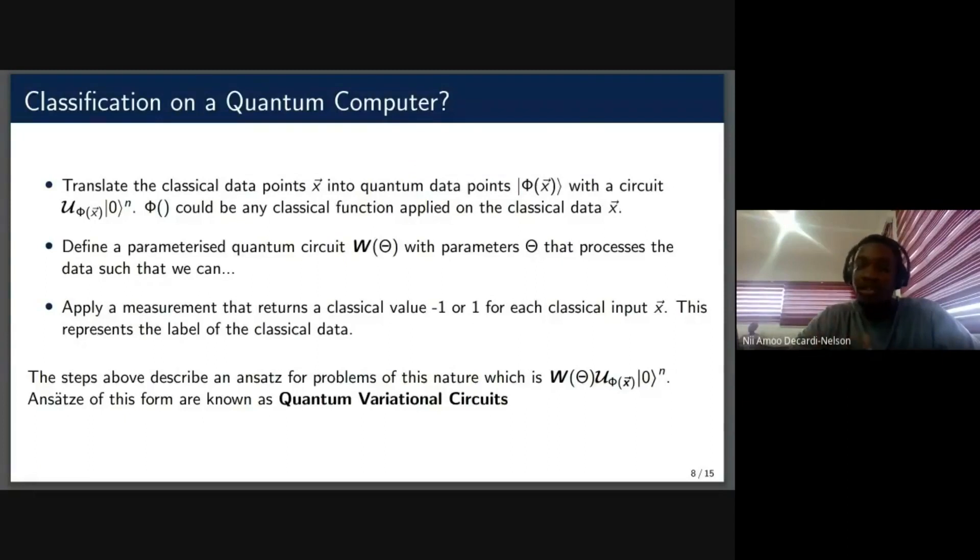When you combine all these three steps together, we have a template or an ansatz that is generally known as a quantum variational circuit. So that's what is usually used in basic quantum classifiers.